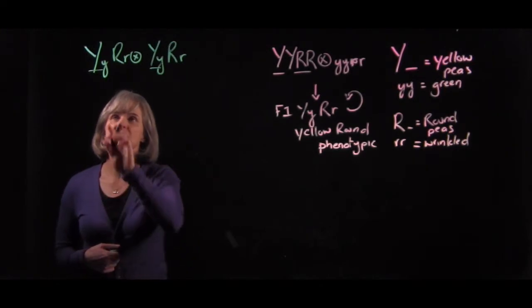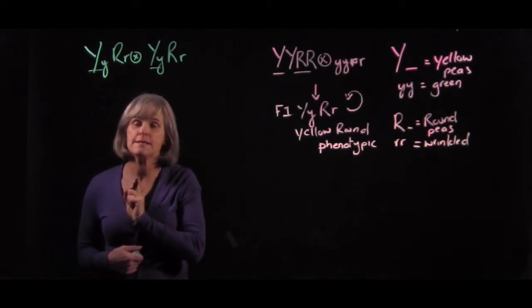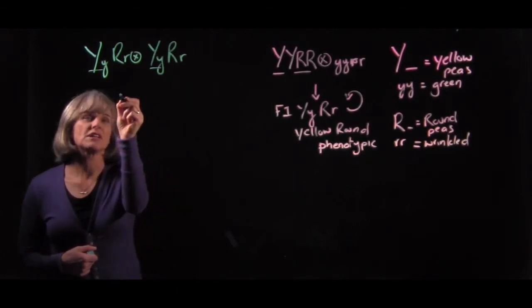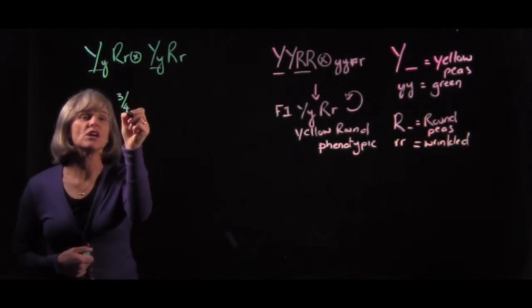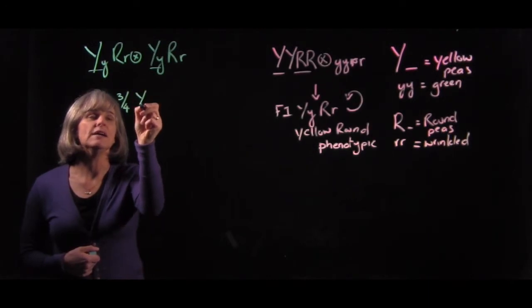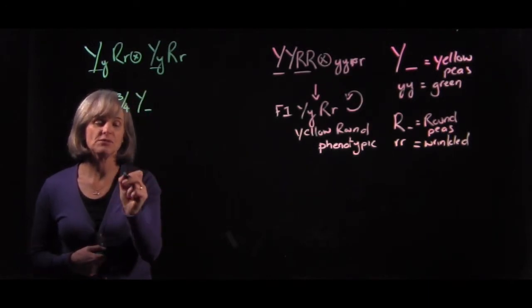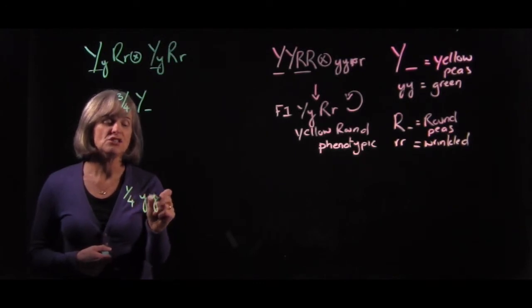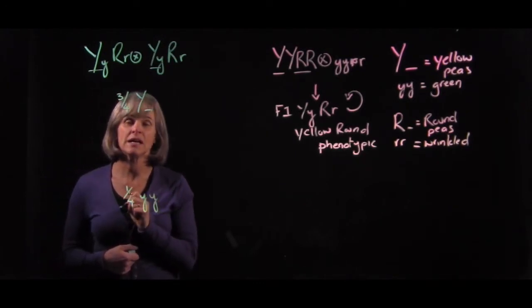We can calculate the probability of each phenotype independently and simply multiply them. So I would think to myself, phenotypes from a self of two hets would be: I would expect three quarters of the progeny to be yellow and have the dominant phenotype, and I would expect one quarter of the progeny to have the recessive phenotype and be green.